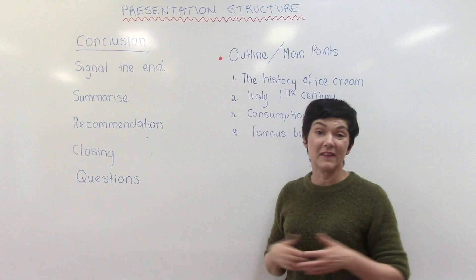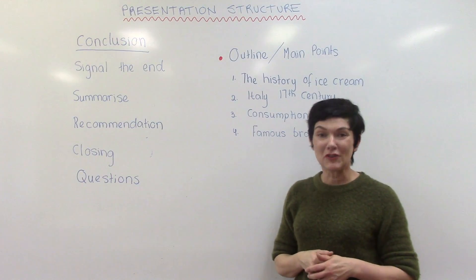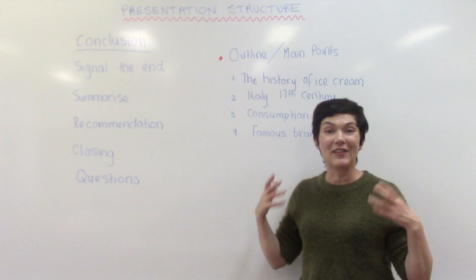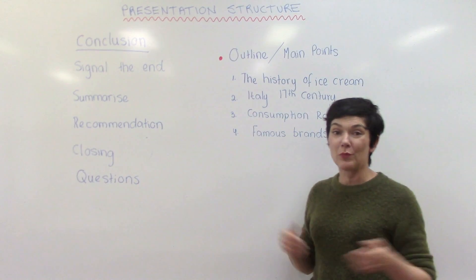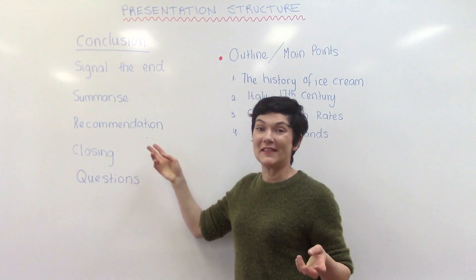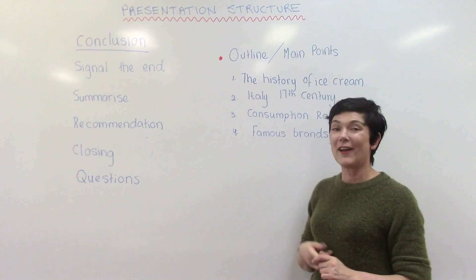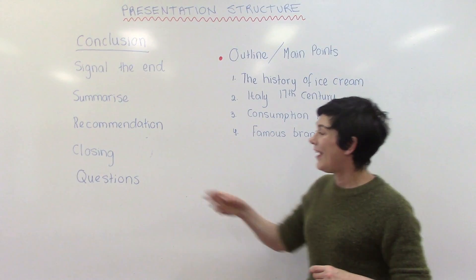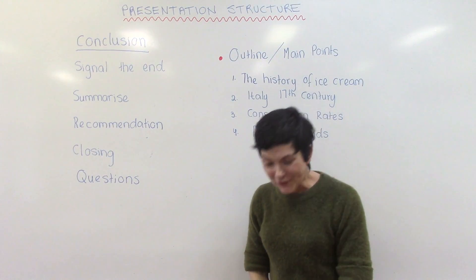For example: 'Firstly we had a look at the history of ice cream and we learned that it was 3,000 years old. Modern ice cream originated from Italy in the 17th century. Australia had the highest consumption rate of ice cream in the world. And finally, the famous take-home brands were Magnum and Cornetto.' You should also make a recommendation — something like: 'Next time you buy an ice cream, think about the fact that the food you're eating is actually 3,000 years old.' Then close with: 'Thank you for your attention — I'd be glad to answer any questions now.'